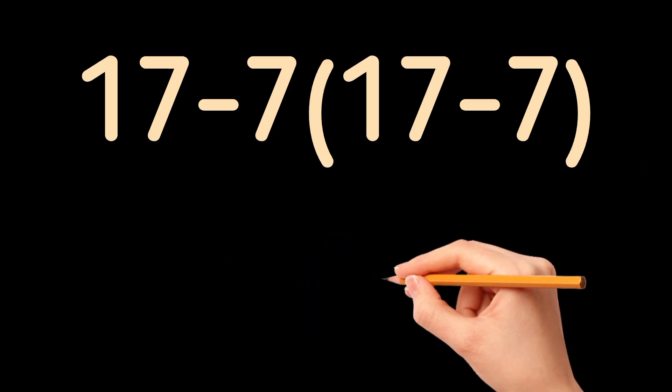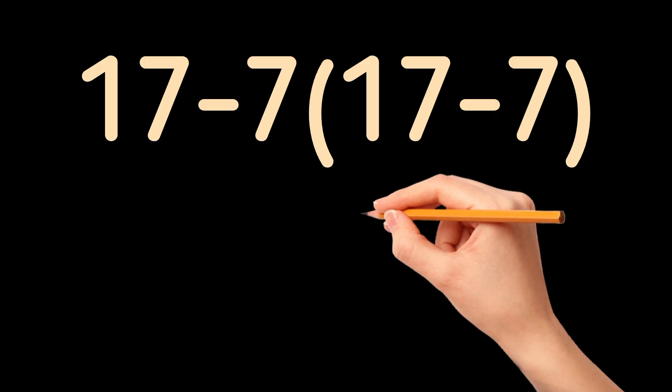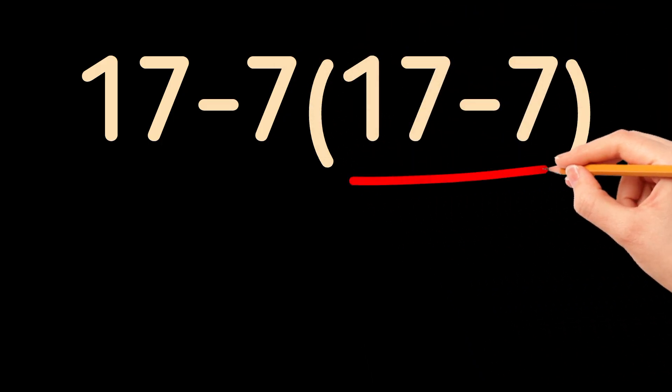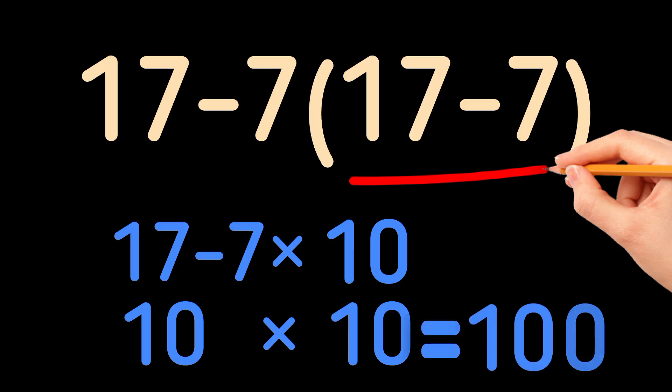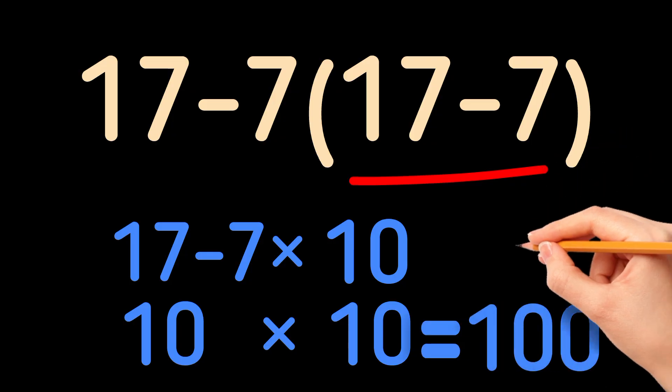Let's see why so many people get this wrong. They start by doing the parentheses first. Inside, we have 17 minus 7, which equals 10. Now the expression becomes 17 minus 7 times 10. So they go 10 times 10 equals 100. Seems right, but it's not.